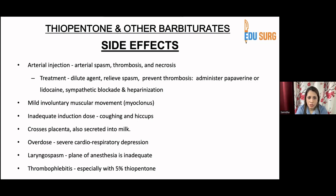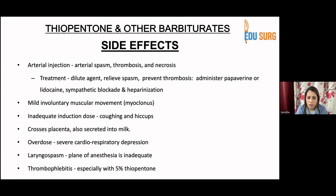It causes mild involuntary muscular movements, but not as much as ketamine. An inadequate induction dose may cause coughing and hiccups. It does cross the placenta and is also secreted into milk. Overdose can cause severe cardiorespiratory depression. Laryngospasm occurs only if the plane of anesthesia is inadequate. Thrombophlebitis is more common with the 5% solution of thiopentone, so it is better to give it in a running line while flushing the line intermittently.